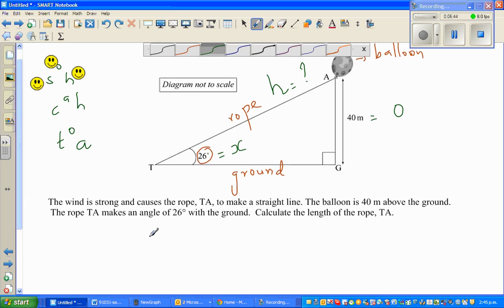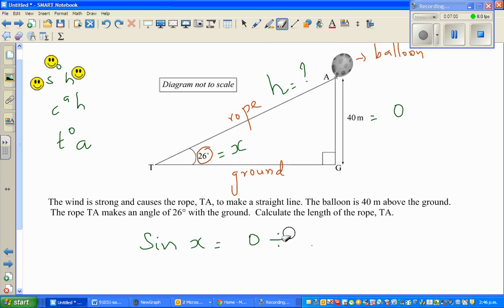So I'll say sine of X is opposite divided by hypotenuse. You can also directly do it, so let me do that in a different way. So here, by looking at the formula, hypotenuse - if it is SOH, you can write in three different ways.